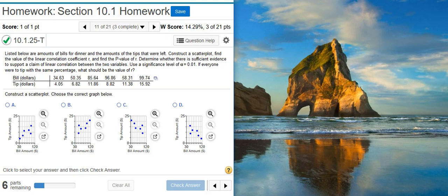Listed below are amounts of bills for dinner and the amounts of the tips that were left. Construct a scatter plot. Find the value of the linear correlation coefficient r and find the p-value of r. Determine whether there is sufficient evidence to support a claim of linear correlation between the two variables. Use a significance level of alpha equals 1%. If everyone were to tip with the same percentage, what should be the value of r?